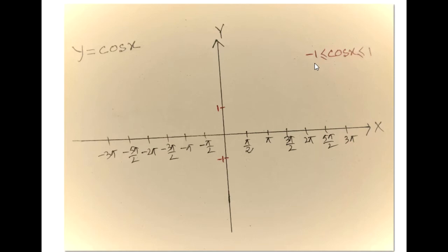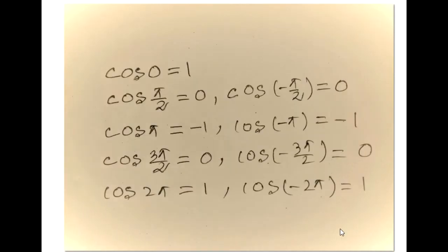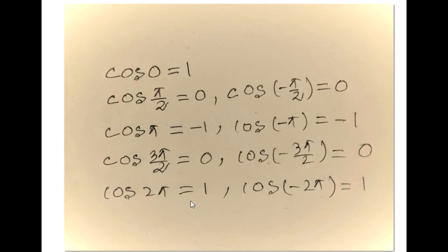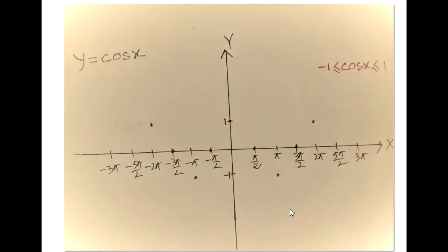We know that minus 1 is less than or equal to cos x, less than or equal to 1. And we know the value cos 0 is 1, cos pi over 2 is 0, cos negative pi over 2 is 0, cos 2pi is 1, and cos negative 2pi is 1. So I indicate those points.